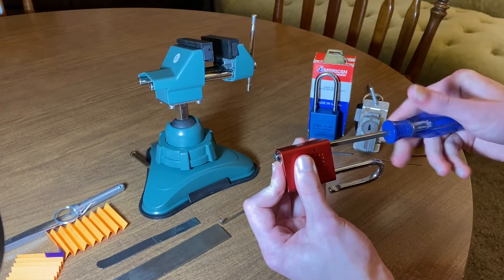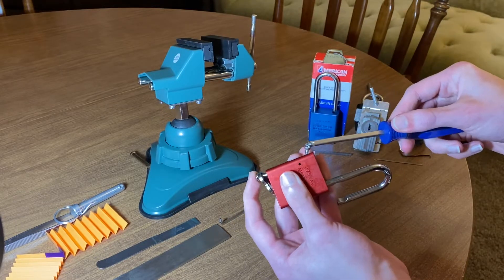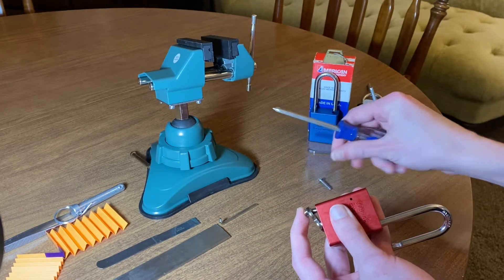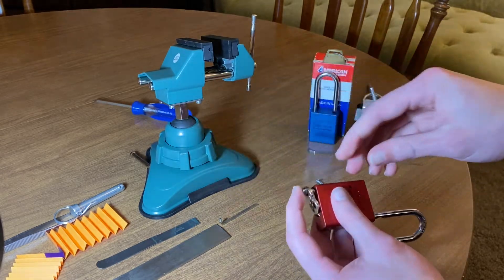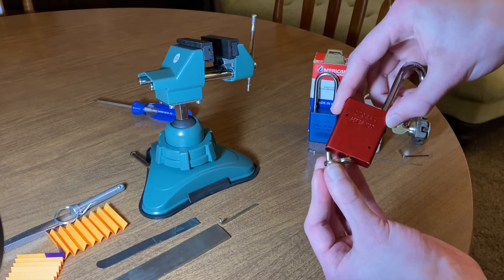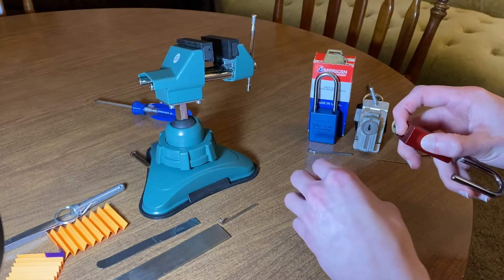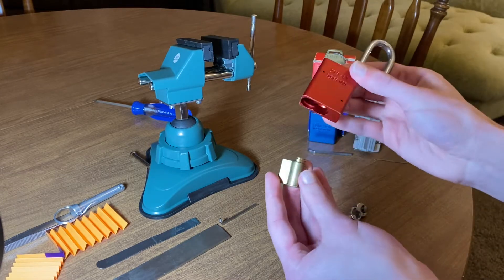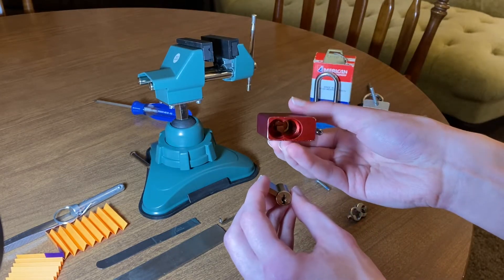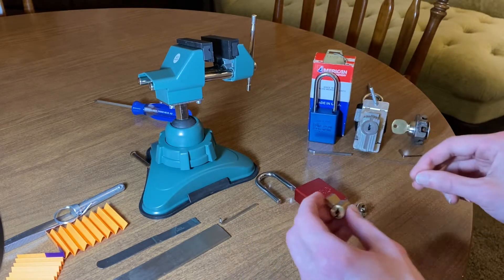So, to gut as usual for these types of locks, a Phillips screwdriver down the shackle hole. And remove the core retention plate from the lock body. Set that there. There's the body.